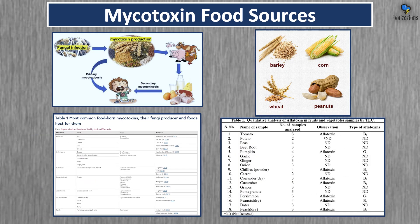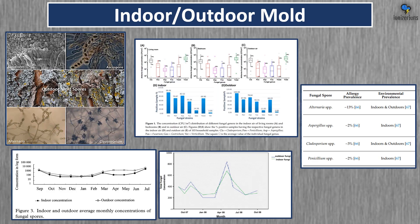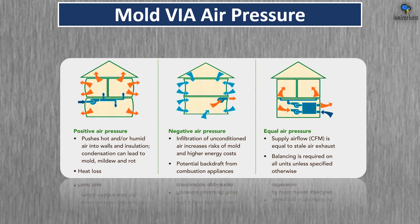Mycotoxins can be found in dried fruits, cereals, milk, cheese, juice, vegetables, fruits, corn, and peanuts — essentially anywhere. Mold exists both indoors and outdoors in all seasons of the year. Additionally, air pressure in your home can actually control how much mold you have — this is something to learn more about for cleaning your indoor air and surfaces.